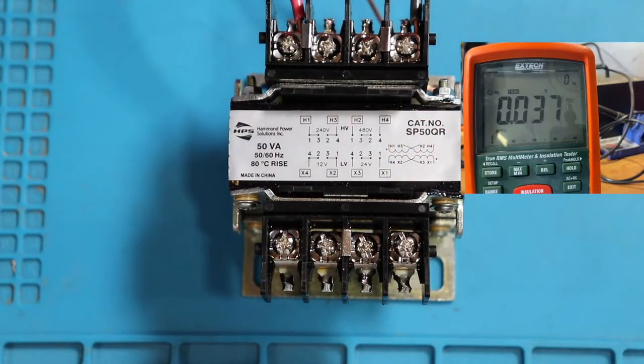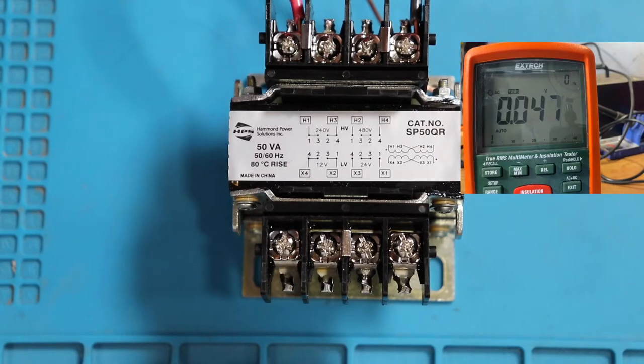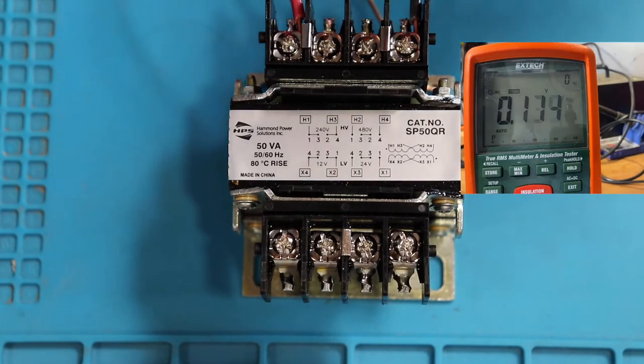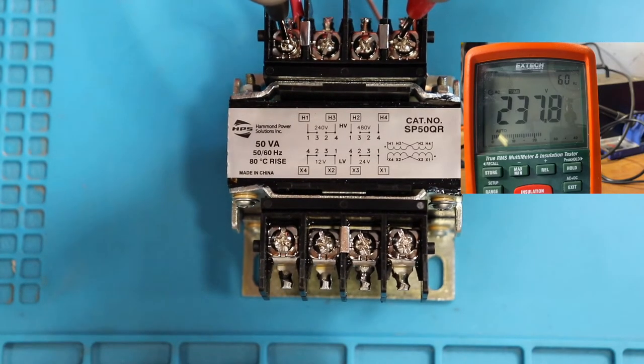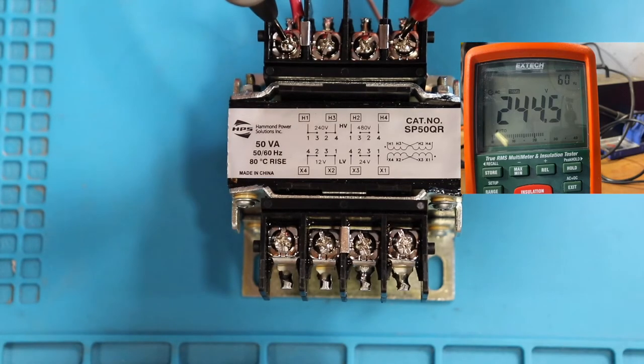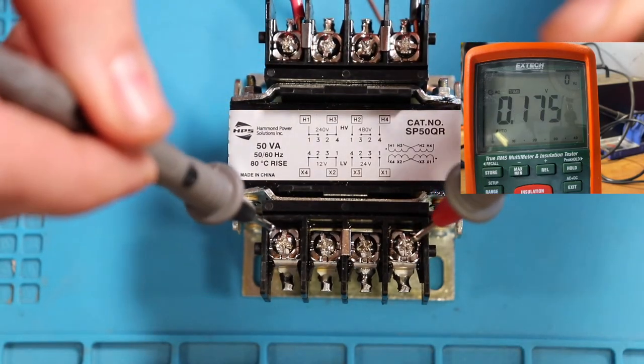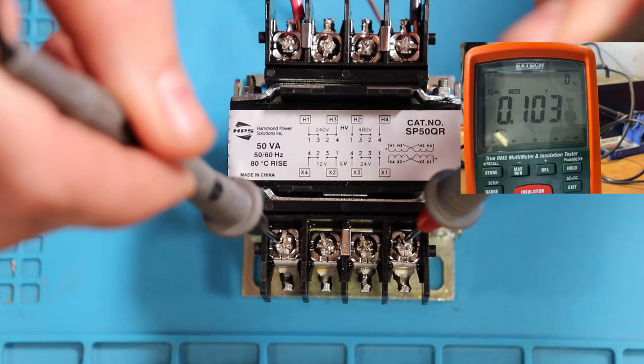Now that our 24 volt tap is in place, we can turn the power back on and test out our voltages. Again, we'll test our primary just to make sure we have the proper incoming voltage. That's good. And now to test for our 24 volts, the same points as the 12 volts.